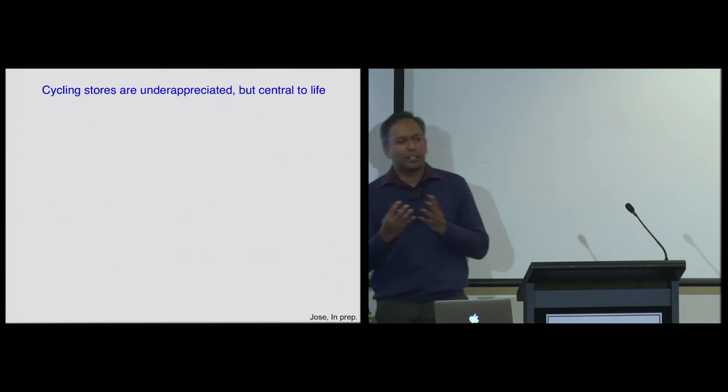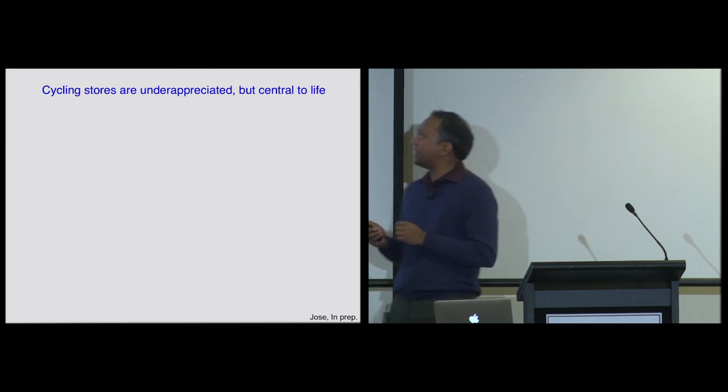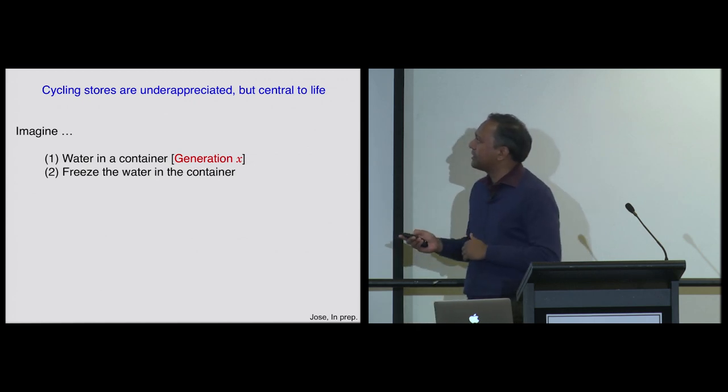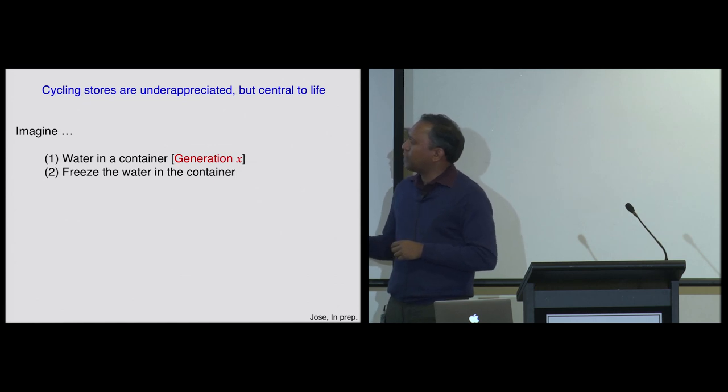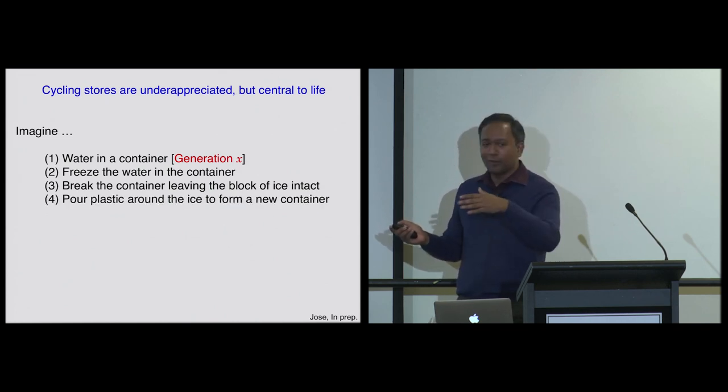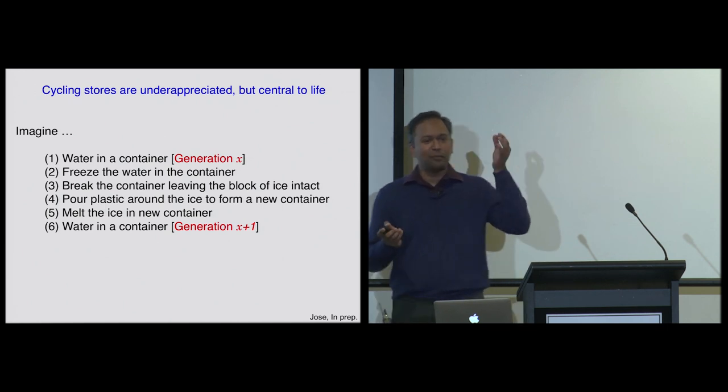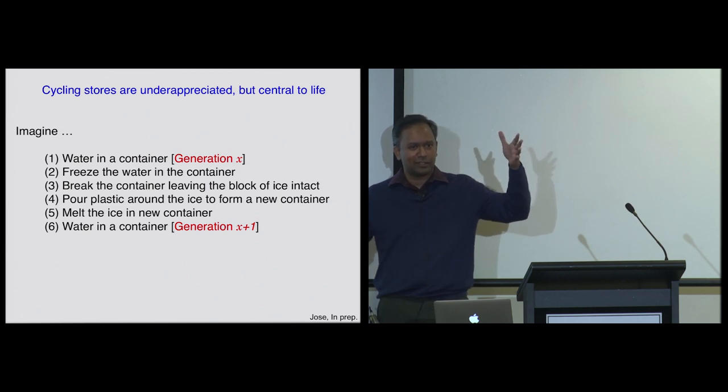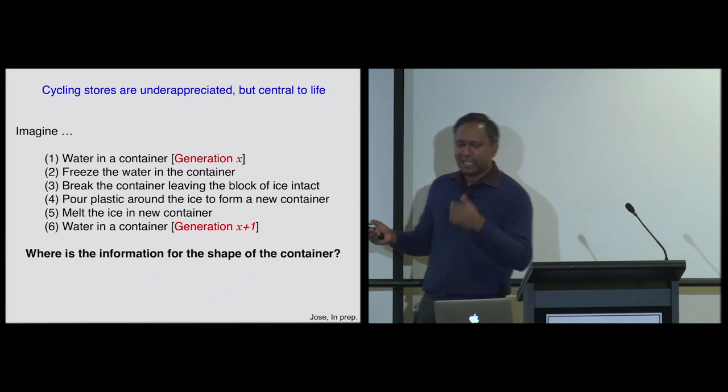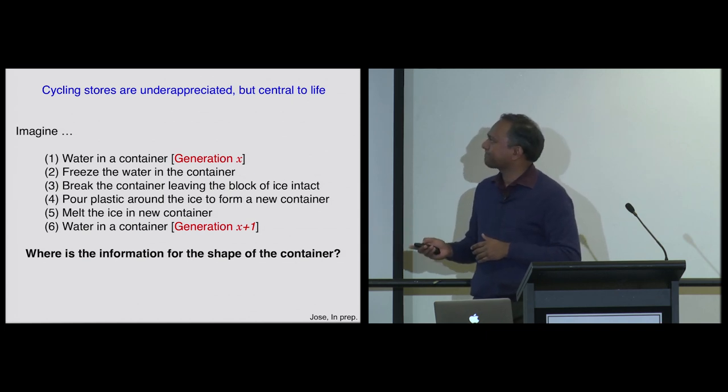I think cycling stores are particularly difficult for people to wrap their mind around, so I'd like to give you an experiment you can do in your own minds. Please play along with me. Imagine if there is water in a container, and we'll start that as one particular generation. Imagine a water container in your minds. Freeze the water in the container. Break the container, leaving the block of ice intact. Now pour plastic around it, forming the container again. Melt the ice. And now you have water in the container next generation. So in your minds, you went from one generation of shape and form to the next. The real question is, where is the information for the shape of the container? Each of you made it up in your minds. So that's what's missing when you are not thinking about cycling stores of information.